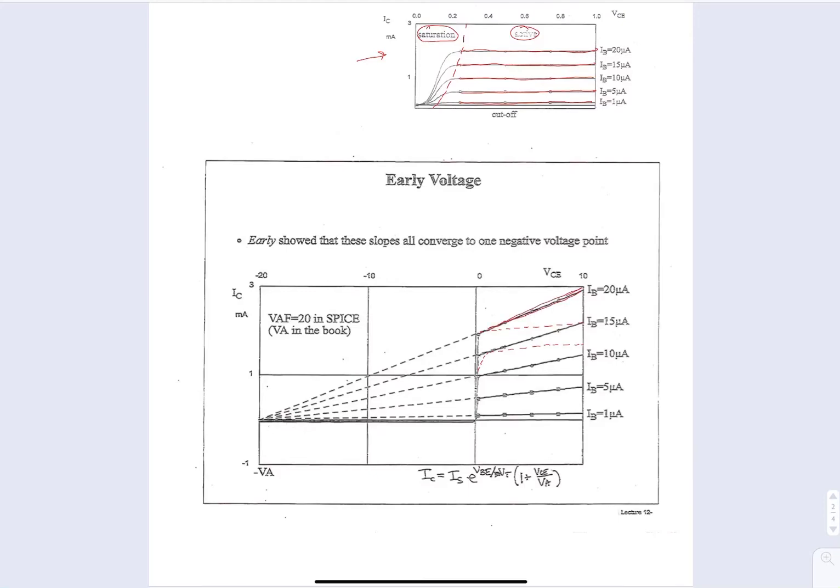So it is an unwanted effect. If we draw all of these slopes that instead of being flat, there is actually a slope to it, they will converge at this point out here called minus VA. That is called the early voltage.